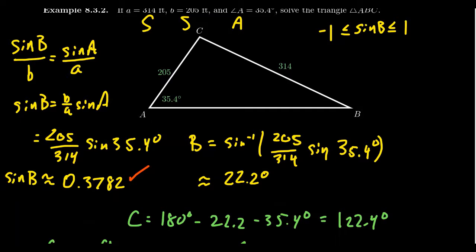If we label the information we just found, we would see that angle C has a measure of 122.4 degrees, the length of c turned out to be 458 feet, and angle B turned out to be 22.2 degrees.